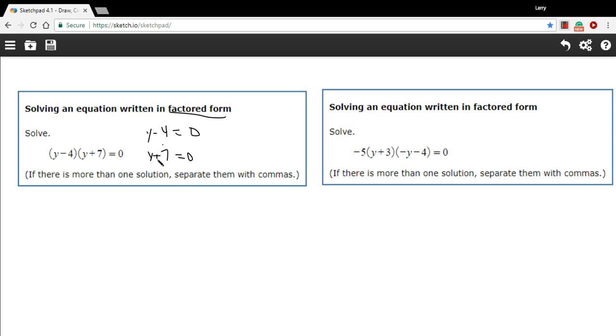And this is how we go about solving this type of factored form equation. We just set each of the factors equal to zero, and then we solve them for the variable.